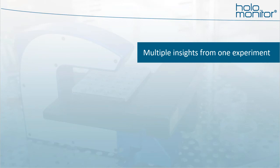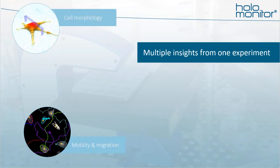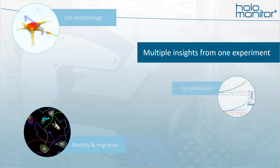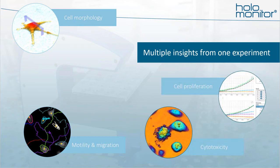Holomonitor gives you multiple insights from one experiment setup. Combined insights of both morphology and movement behavior of cells are a powerful tool when studying complex biological questions, such as EMT and cancer metastasis or stem cell differentiation kinetics. But it's not just kinetic morphology and movement data — you can study other cellular events using the same experiment results, such as cell proliferation, cytotoxicity, or drug dose responses.